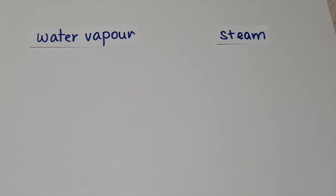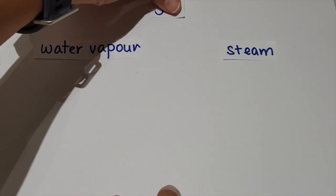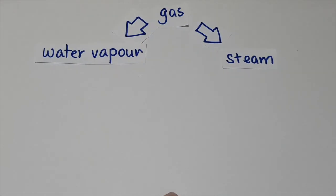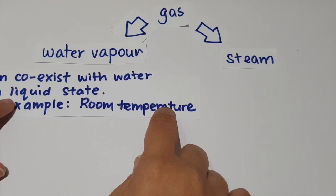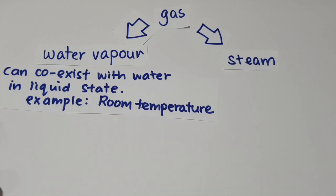Both water vapor and steam are water in the state of gas. However, what is the difference between water vapor and steam? For water vapor, it is something that can co-exist with water in liquid state. So it can be existing in room temperature.